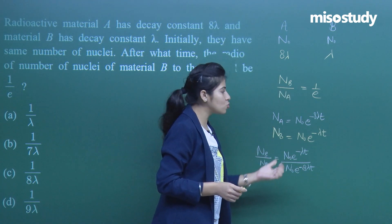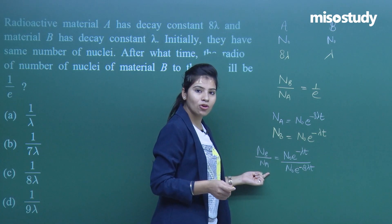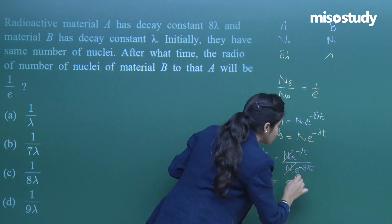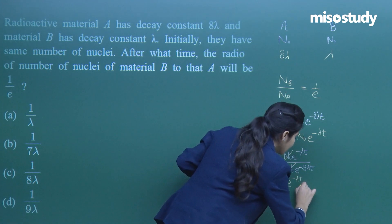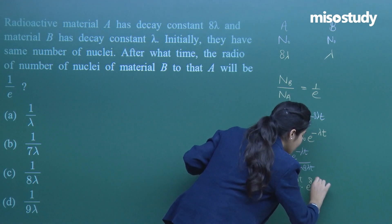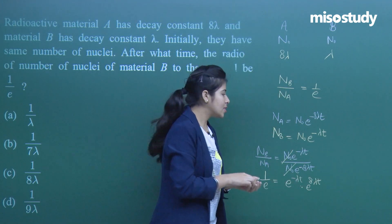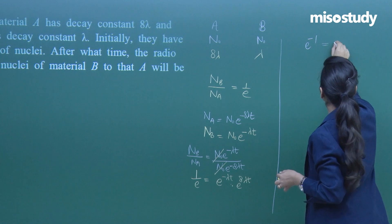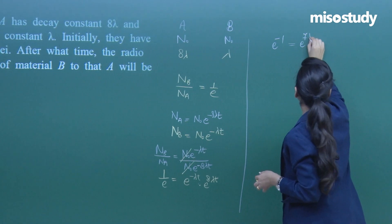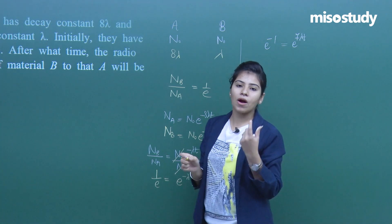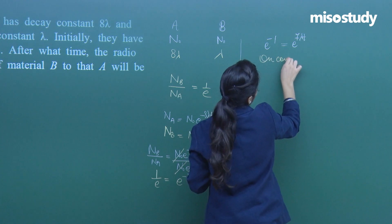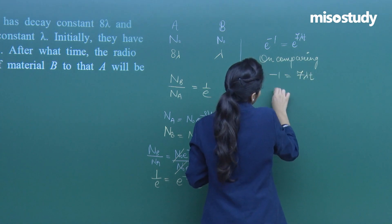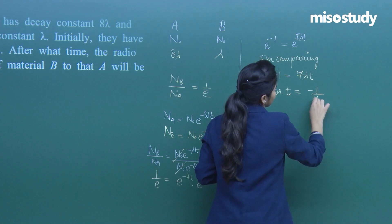N_B upon N_A has been given to be 1/e. So putting 1/e equals e to the power minus lambda t divided by e to the power minus 8 lambda t, the N-not values cancel. We get e to the power minus 1 equals e to the power 7 lambda t. Since the bases are the same, comparing powers gives minus 1 equals 7 lambda t, so t equals minus 1 upon 7 lambda.